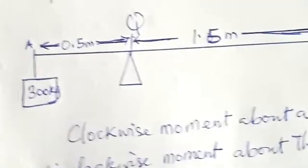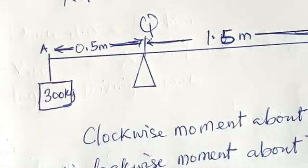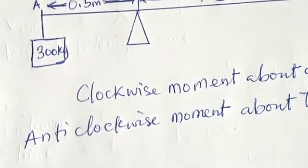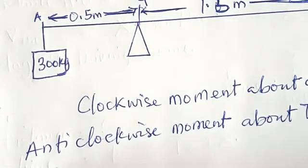The fulcrum—the crowbar is going to rotate about that point Q, and that is the main thing.